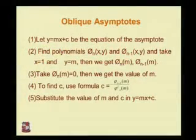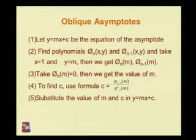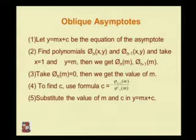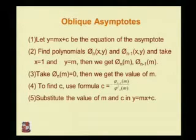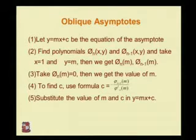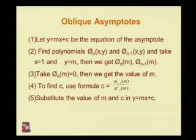To find the oblique asymptotes, there are five steps. Let y = mx + c be the equation of the asymptote. Second, find the polynomials phi_n(x,y) and phi_{n-1}(x,y), and taking x=1 and y=m we get phi_n(m) and phi_{n-1}(m). Third, take phi_n(m) = 0 to get the value of m. To find c, use the formula: c = -phi_{n-1}(m) / phi_n'(m), where phi_n'(m) is the derivative of phi_n(m).